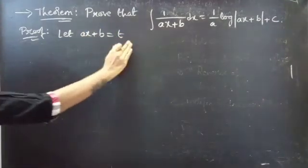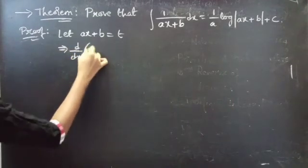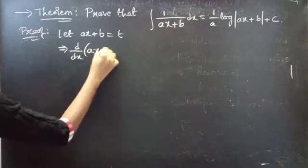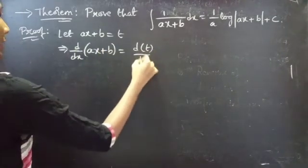Let ax plus b equals to t. Now differentiating on both sides with respect to x, d by dx of ax plus b equals to d of t by dx.